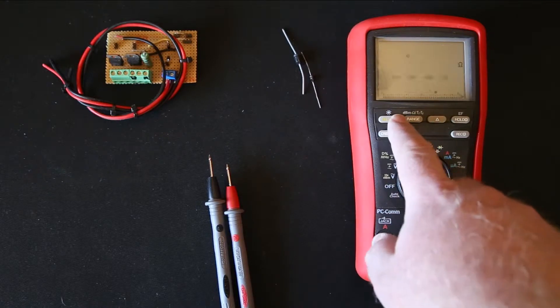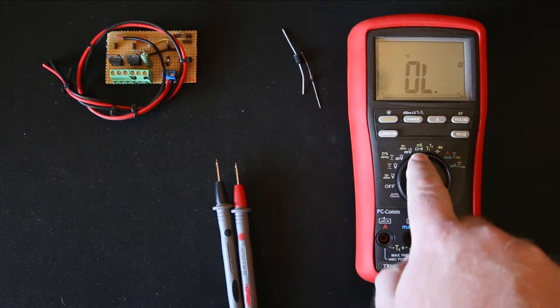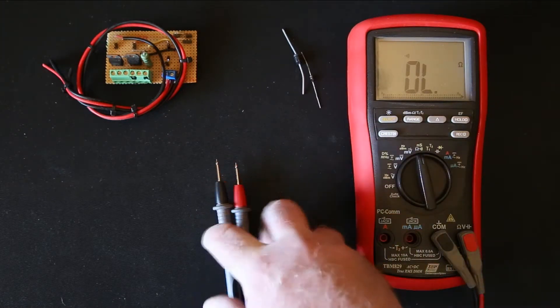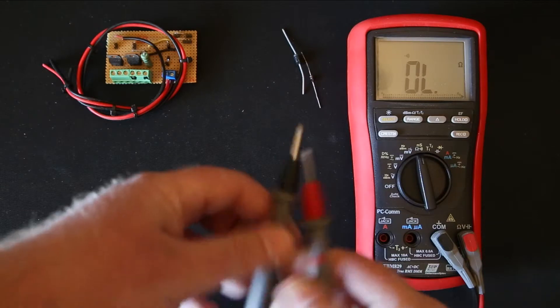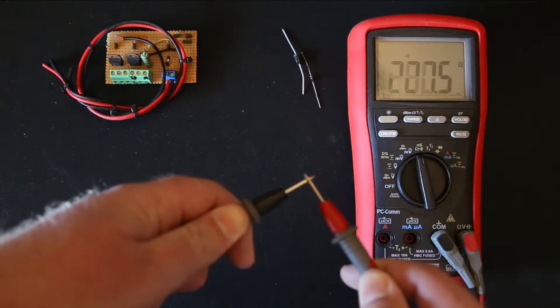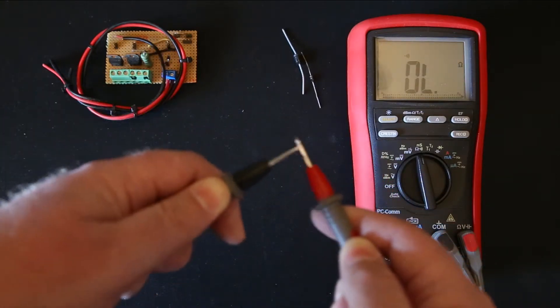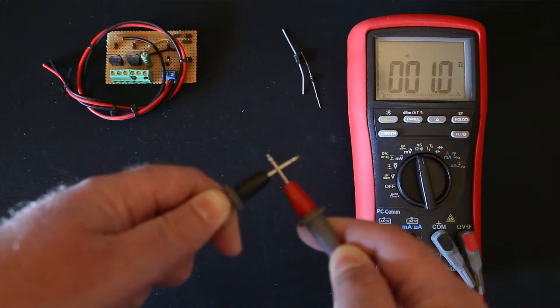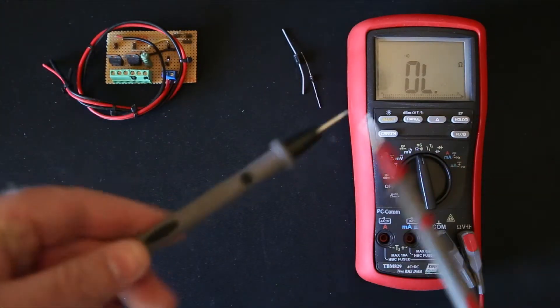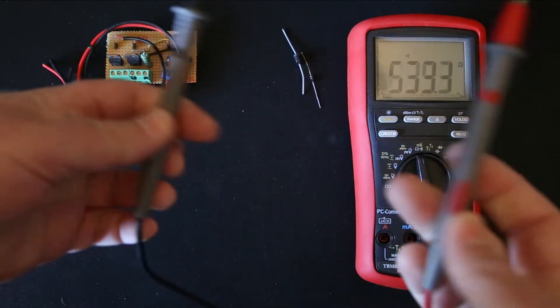Now another option on your multimeter is something called continuity test. Continuity test is like that little speaker symbol showing a shock wave. Your continuity test is showing you there's continuity, very low resistance between two points. You can check fuses, wires for broken connections and stuff like that using the continuity test feature.